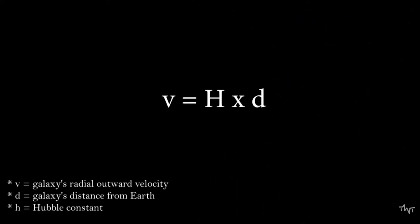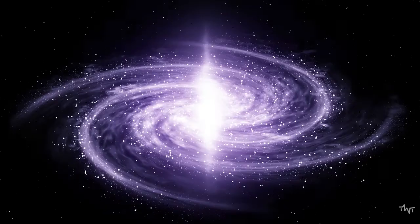The velocity of a galaxy could be expressed mathematically as v equals h multiplied with d, where v is the galaxy's radial outward velocity, d is the galaxy's distance from Earth, and h is the constant of proportionality, called the Hubble constant.